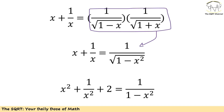Now let's focus on this simplified form and continue with more simplification. Instead of having the multiplication of those two terms, we get the outcome which is 1 over radical(1 minus x²). Looking at what we have, the first thing we can do is remove the radical by taking the power of 2 of both sides. On the left hand side we get x² plus 1 over x² plus 2, and on the right hand side we get 1 over (1 minus x²).